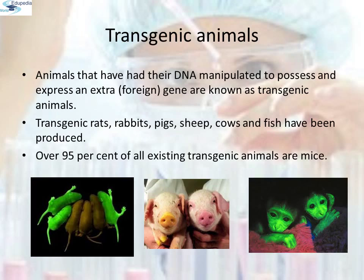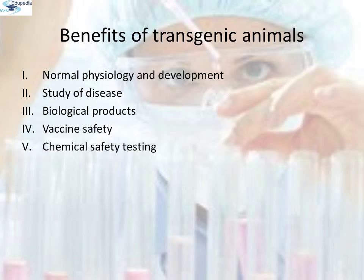Transgenic animals. Animals that have their DNA manipulated to possess and express an extra or foreign gene are known as transgenic animals. Transgenic rats, rabbits, pigs, sheep, cows and fish have been produced, although over 95% of all existing transgenic animals are mice. Benefits of transgenic animals: first, normal physiology and development — transgenic animals can be specifically designed to allow the study of how genes are regulated and how they affect the normal functions of the body and its development. For example, study of complex factors involved in growth such as insulin-like growth factor 2.